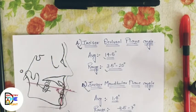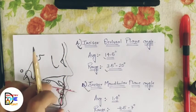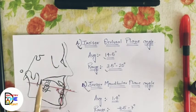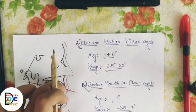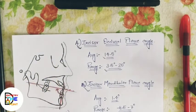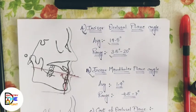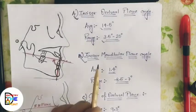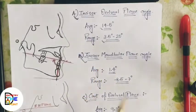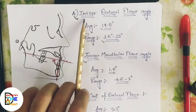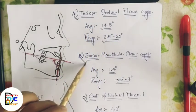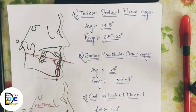If the incisor occlusal plane angle decreases, the incisors are proclined; if it increases, the incisors are retroclined. The second dental parameter is the incisor mandibular plane angle — similar concept but measured in relation to the mandibular plane rather than the occlusal plane. If the angle is increased, the incisors are proclined; if decreased, the incisors are retroclined.